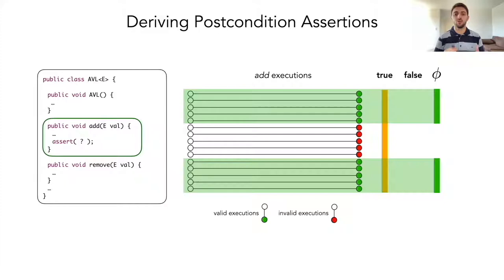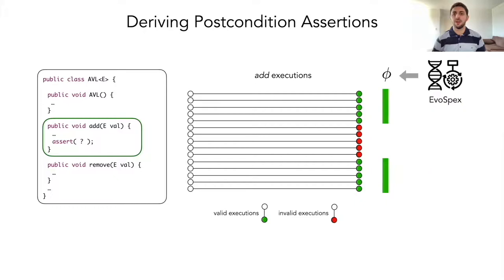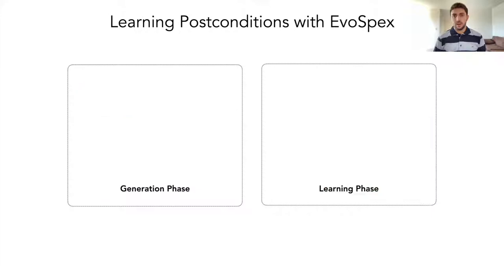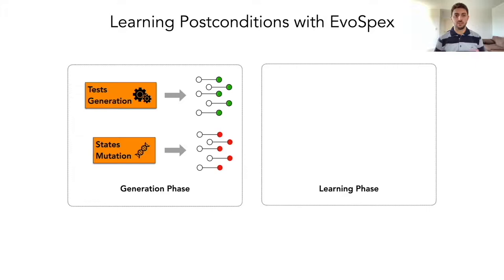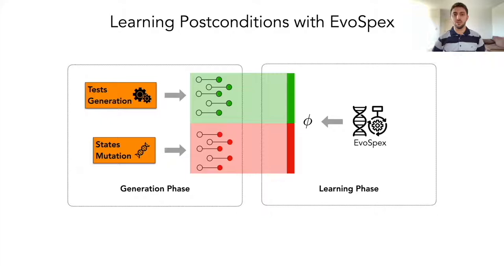Our idea is to use an evolutionary algorithm that searches for such a post-condition. Essentially, our technique has two phases. One is a generation phase that uses test generation and state mutations to produce the valid and invalid executions, and a learning phase that essentially uses an evolutionary algorithm to search for a post-condition that captures the valid executions while rejecting the invalid ones.